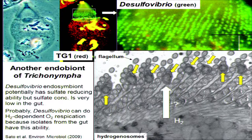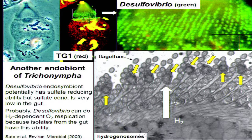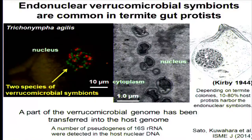Desulfovibrio is known as a sulfate reducer, and the endosymbiont potentially has sulfate-reducing ability. However, sulfate concentration is very low in the gut environment, and probably the Desulfovibrio endosymbiont can perform hydrogen-dependent O2 respiration, because almost all isolates from the termite gut have these abilities.